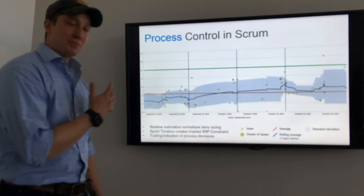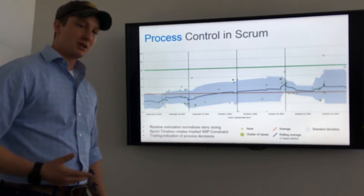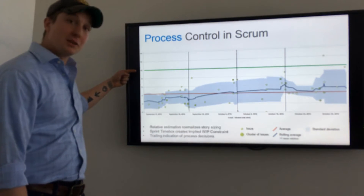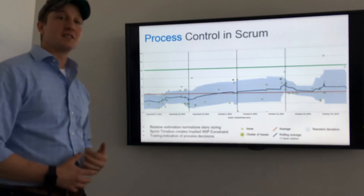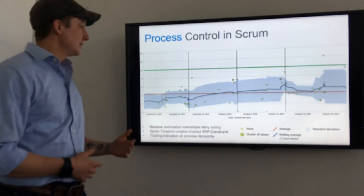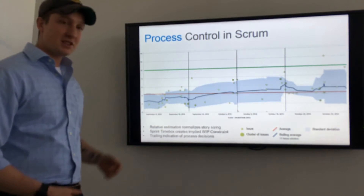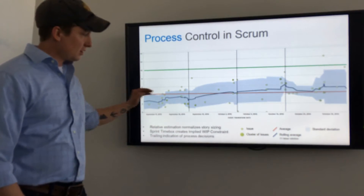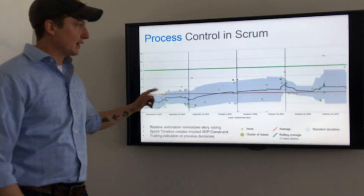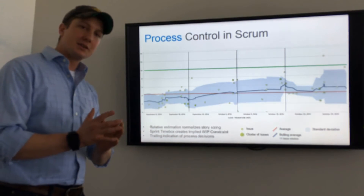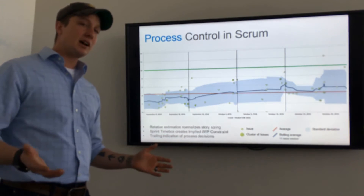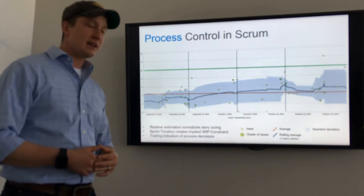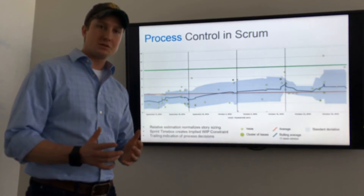When you look at your process control chart in Scrum, here's what you're looking for. You can draw an imaginary line at the number of business days in your sprint timebox, and your process should stay within those bounds. You can see this long run average and the rolling average are pretty close together, so there's not a lot of variability between the two. The standard deviation, likewise, is staying pretty close.